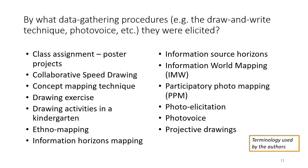Information word mapping is an interactive drawing-based interview technique. It aims to elucidate critical incidents around the information world of users within a social context, and this visual communication method was used to stimulate participant engagement while sharing stories. Participatory photo mapping combines photovoice, community mapping — often using GIS — and community-based participatory research.